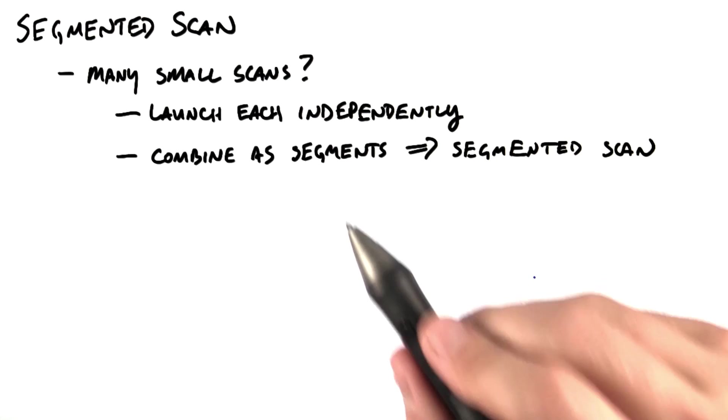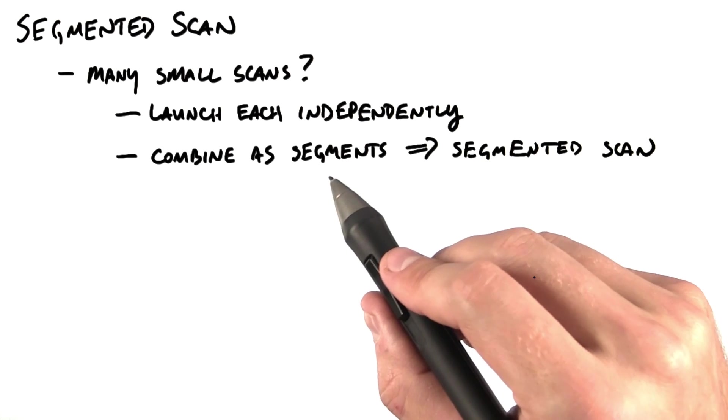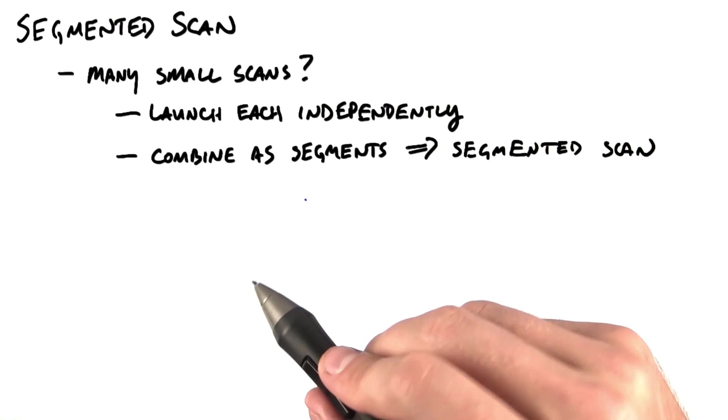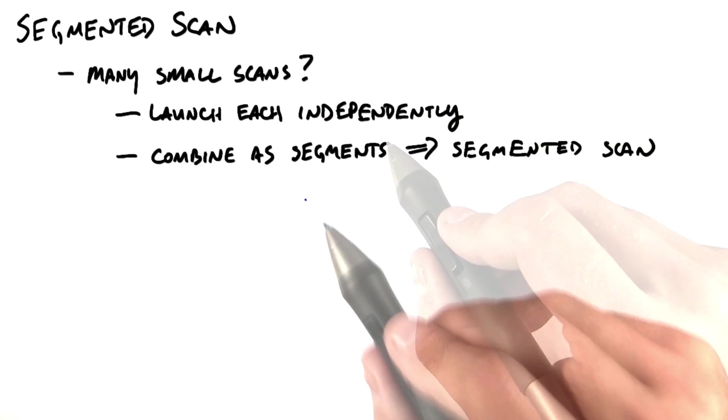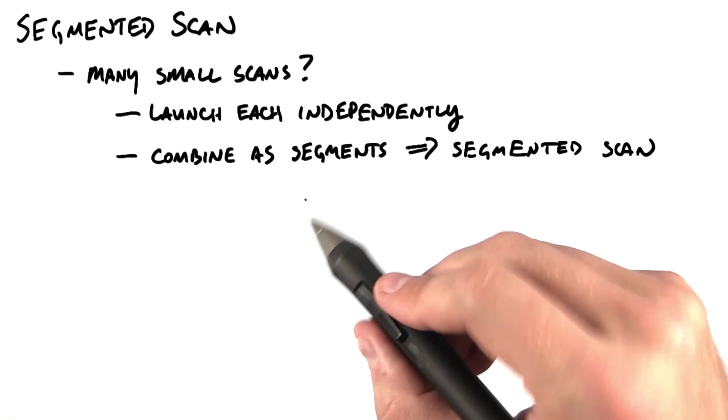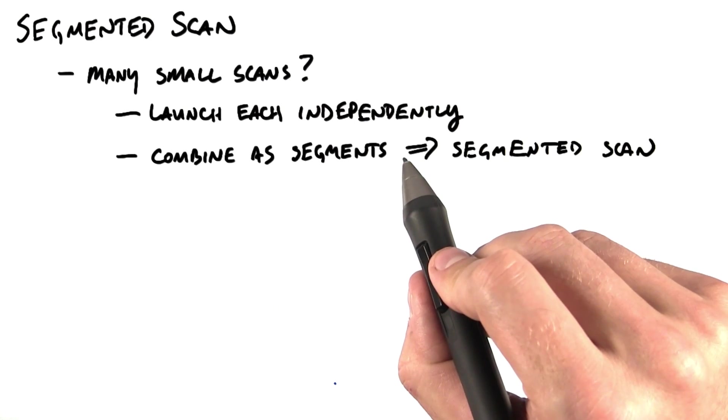Instead, we're going to pack these scans together as segments inside one big array, and then have a special scan operator that scans each of the segments independently. Typically, to indicate where segments begin in an array, we use a second array that has 1s for segment heads and 0s for non-segment heads.